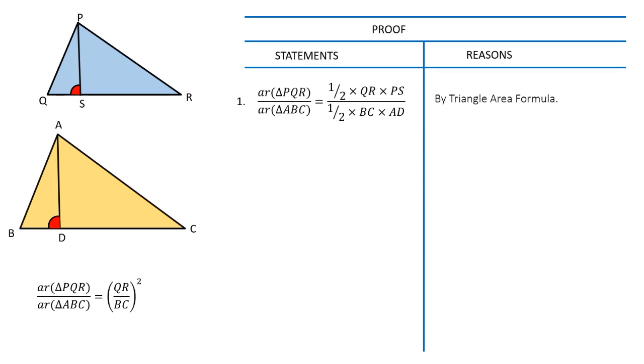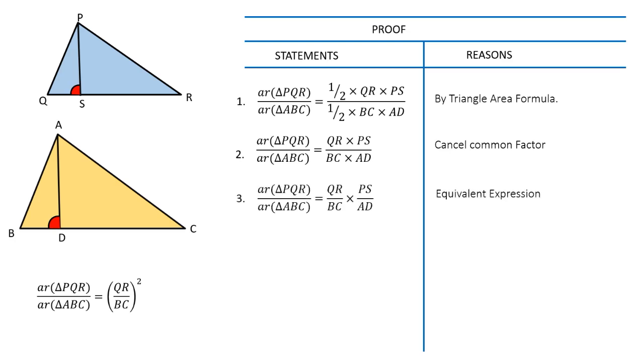...the quantity one-half times side length QR times altitude PS, divided by the quantity one-half times side length BC times its altitude AD. The next step is to cancel the common factor. Then in the above equation, the ratio of the area is equal to the product of the fractions QR over BC and PS over AD.